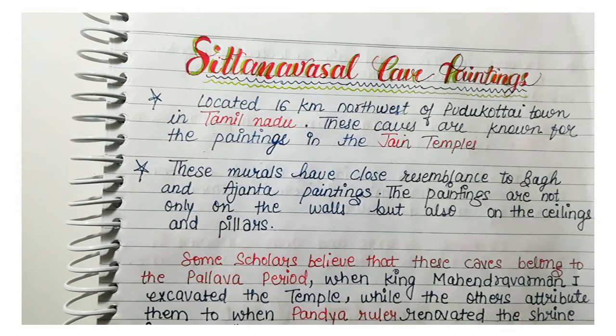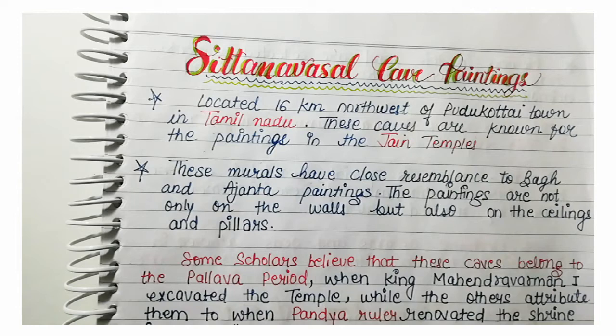Next is Sittan Vassal Cave Paintings. Students, Sittan Vassal Cave is famous for its paintings. Located 16 km north-west of Pudukottai town in Tamil Nadu, these caves are known for paintings related to Jain temples. Remember the location — Tamil Nadu — as direct questions are asked about it.